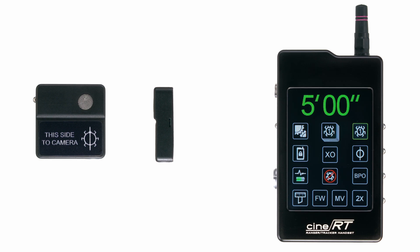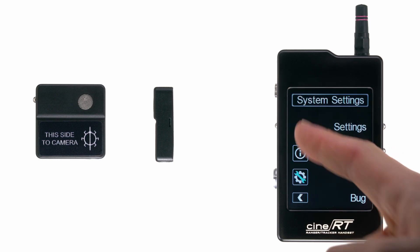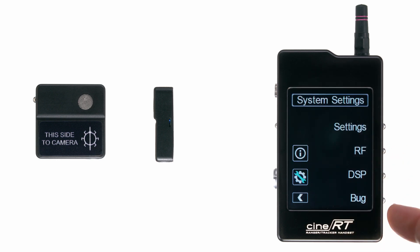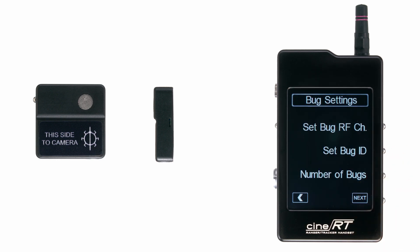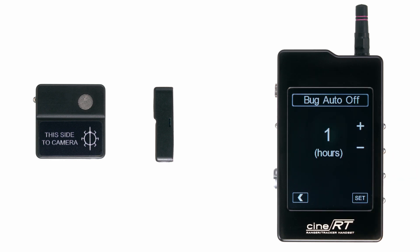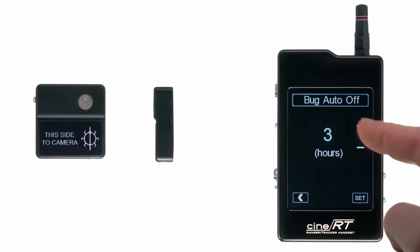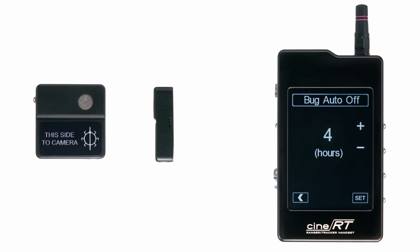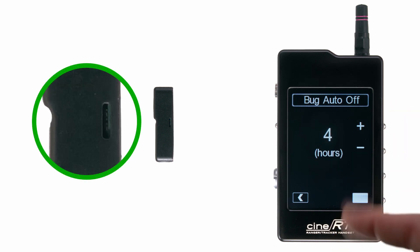If you wish to extend the time, you can go to System Settings, Bug Settings, navigate to the second page, and enter shutdown timer. Here you can adjust the time by hours. When you reach your desired time, hit Set.